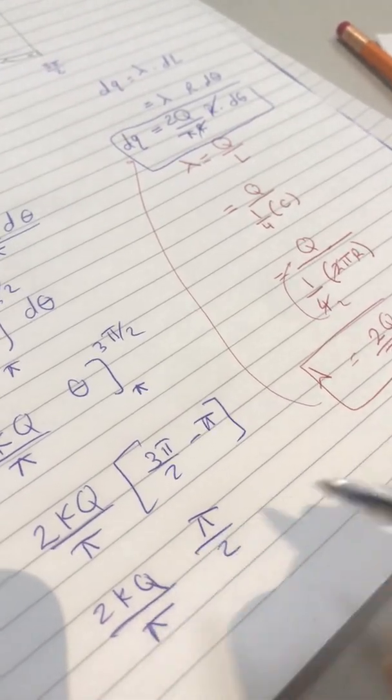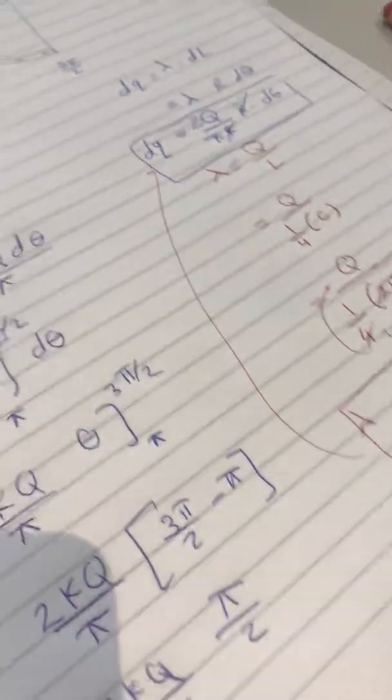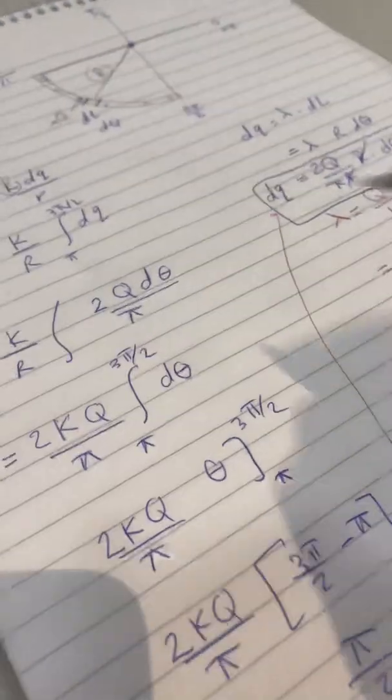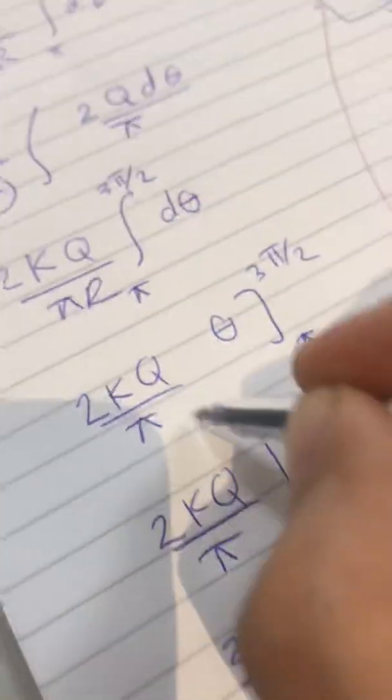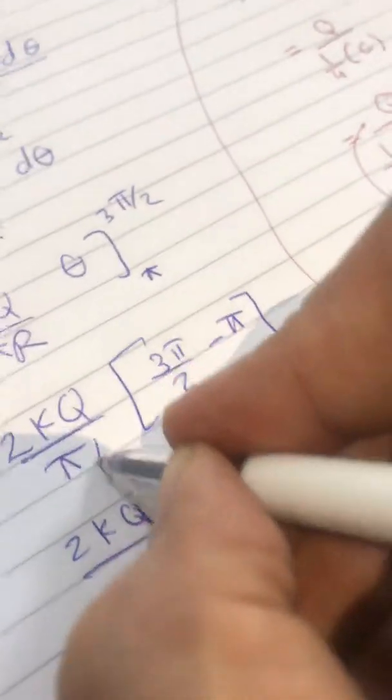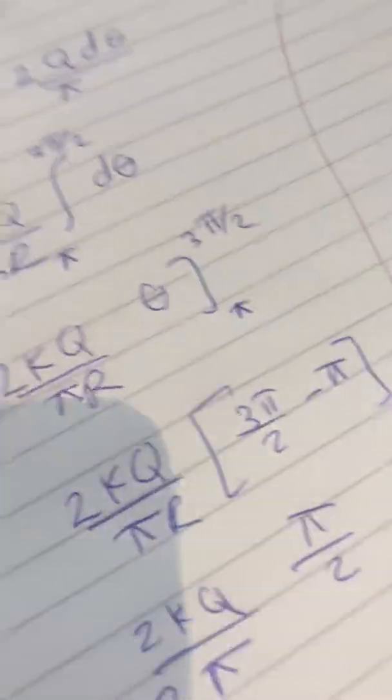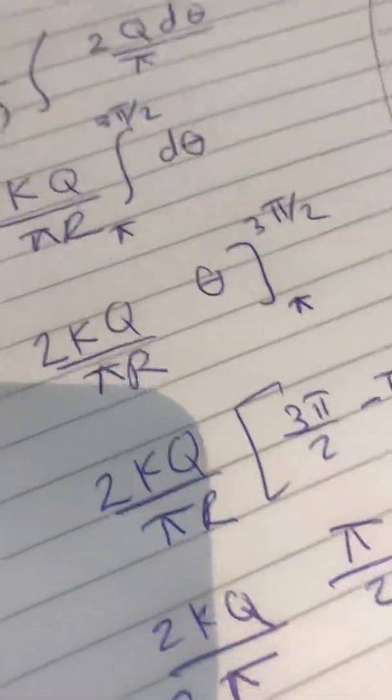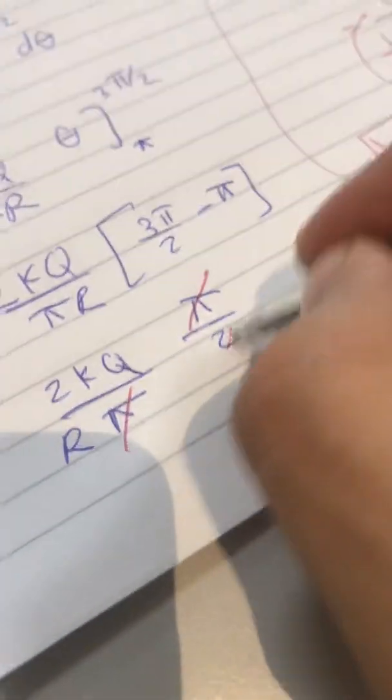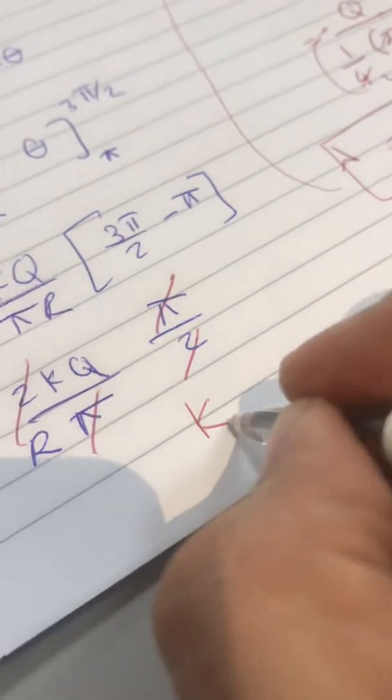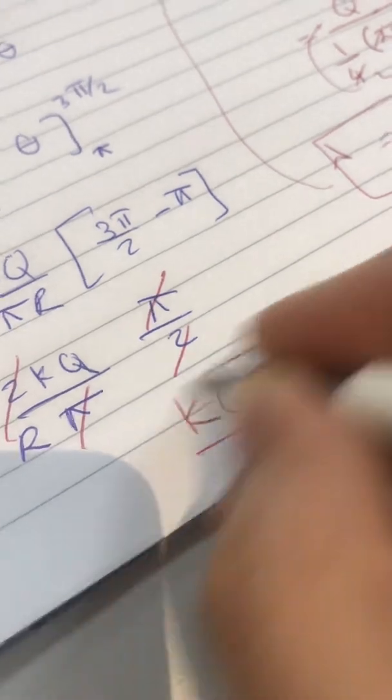Why? I forgot something. I forgot this R. Sorry, see? Because it's from the beginning. Let's cancel the cancellation. This, 2 with 2. So, the final answer, K Q over R.